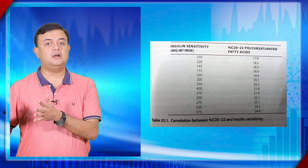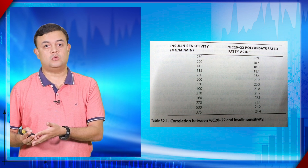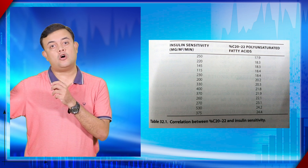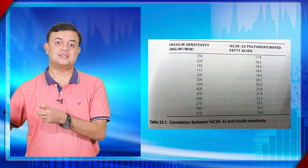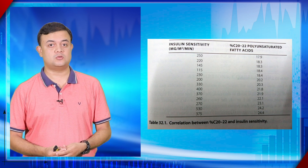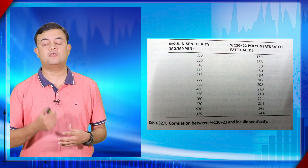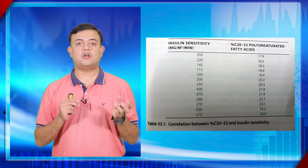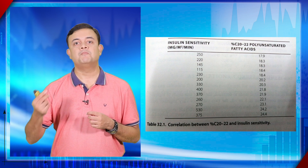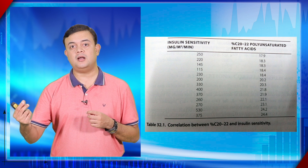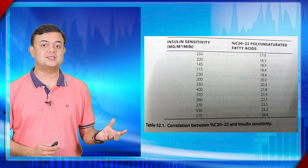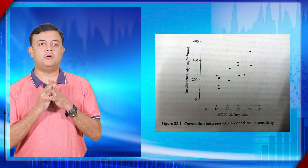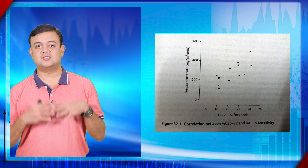Consider this example: insulin sensitivity versus the percentage of long-chain carbon fatty acids (C20–C22) — long-chain unsaturated fatty acids on the membranes of skeletal muscles. Is there any correlation between these two factors? The first factor is the lipid content of the skeletal muscle membrane; the second is insulin sensitivity.